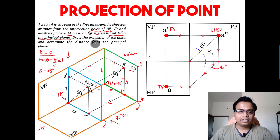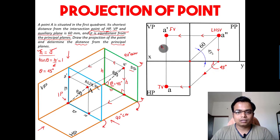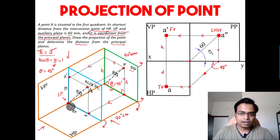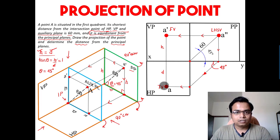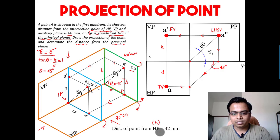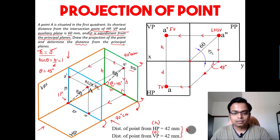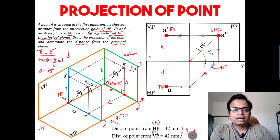What we're interested in is the distance from the principal planes — we have to calculate H and D from the drawing itself. This distance is H — the distance from the horizontal plane — and this distance is D — the distance in front of the vertical plane. You can keep a scale and measure. The answer is: distance of point from HP — that is H — works out as 42 millimeters, and distance from VP — that is D — also works out as 42 millimeters, confirming that H equals D as given initially.